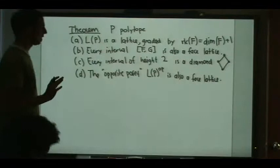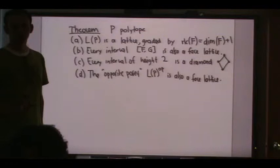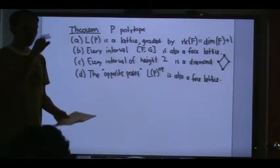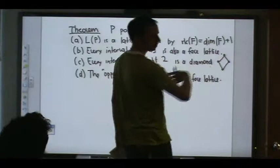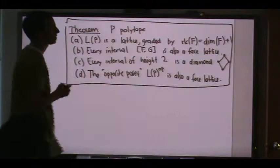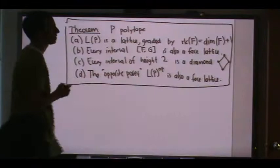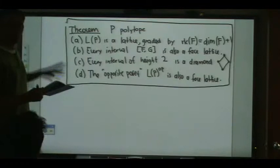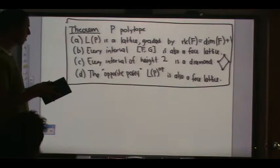So that puts a lot of structure on the face poset — it's not any old random poset. For example, if you look at an interval of length 2 and it has 3 elements in the middle instead of 2, you know there's no polytope for that. This puts a lot of constraints on the face poset.